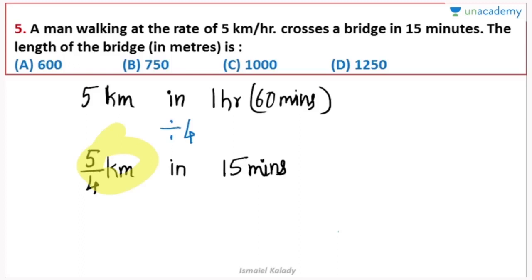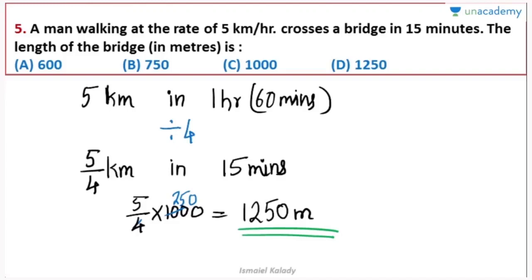We have to take a meter squared. 5 divided by 4 into 5. 1.25 km is 1250 meters. So 5 times 280... we approach a method for the distance.